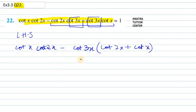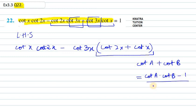Now what we can do, we can apply the formula of cot A plus cot B. Now, cot A plus cot B equals cot A dot cot B minus 1 over cot A plus cot B.